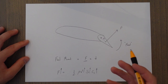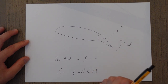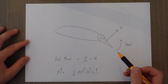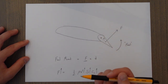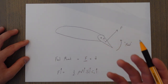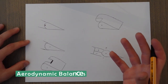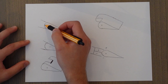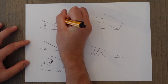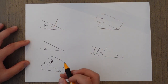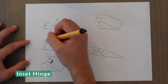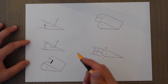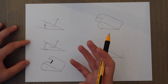So you have to use powered controls, and you can also assist by reducing this feel moment through something known as aerodynamic balances. There are quite a few types, but these are the main ones. In a normal hinge, the hinge point is right where the control surface and wing meet, so when you generate force the balance arm is the full distance. With an inset hinge, you move the hinge inward — if you generate that same force, the balance arm is shorter, and since the moment is force times distance, reducing the distance makes the resistive feel moment smaller.